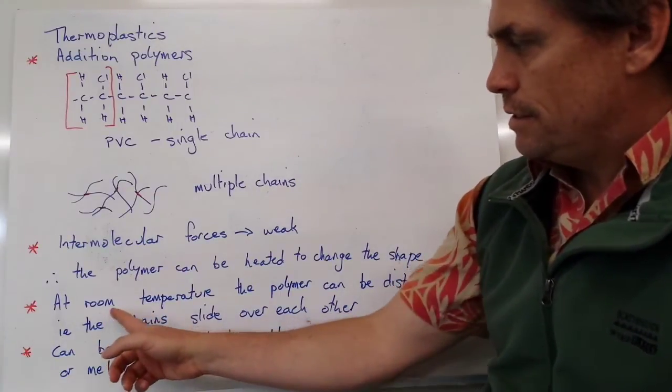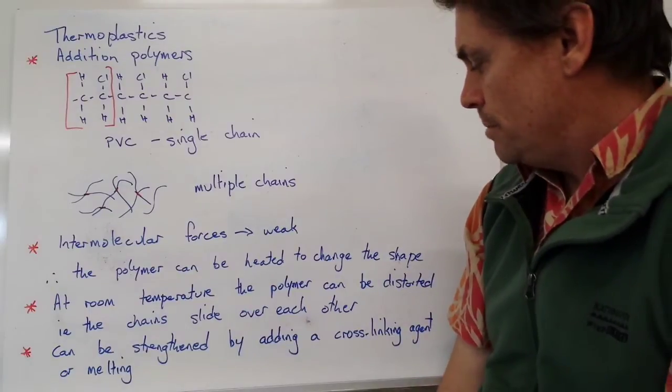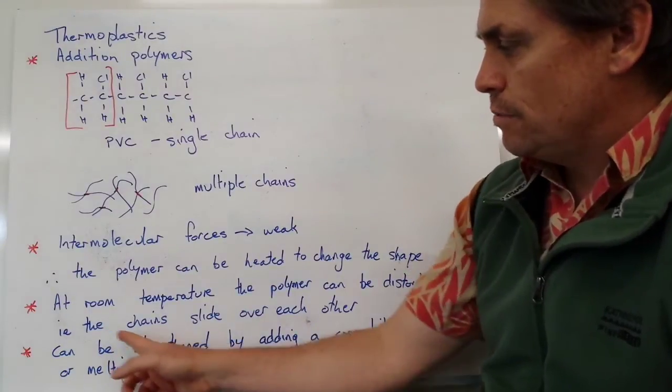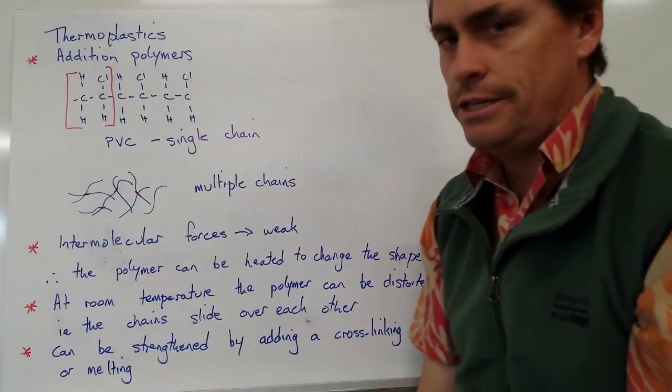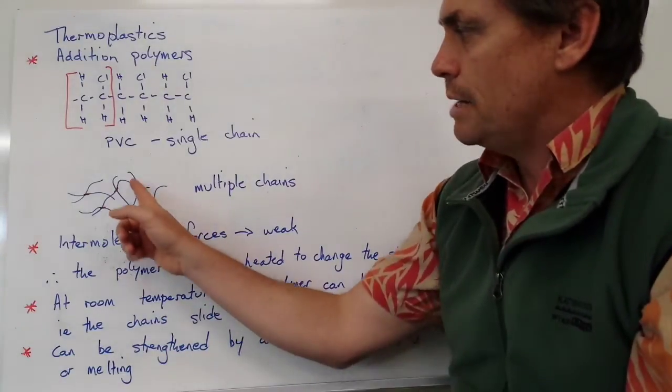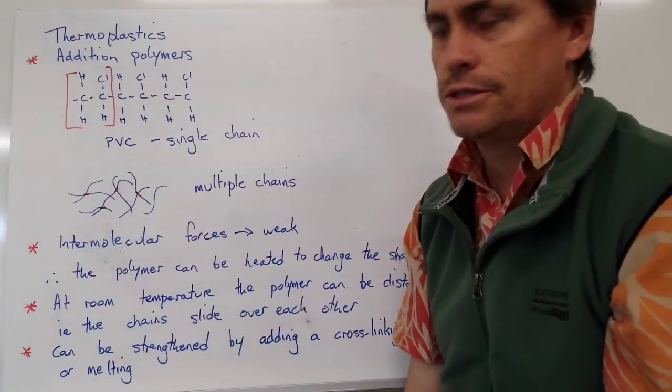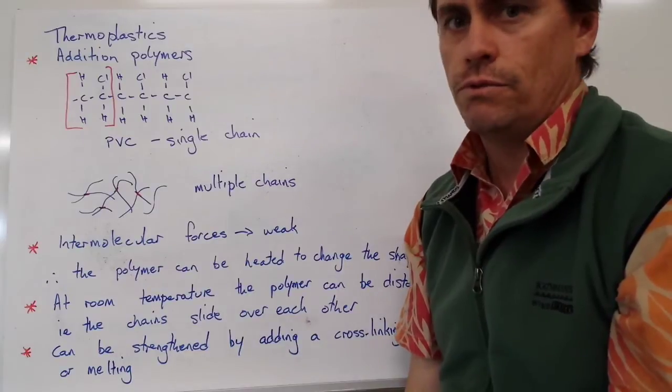At room temperature, the polymer can be distorted. In other words, the chains can slide over each other very easily. We can break bonds and reform bonds that are van der Waals forces quite easily.